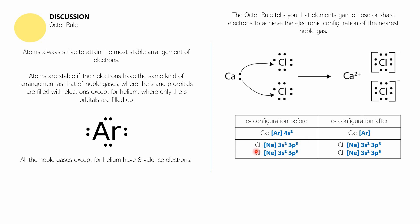Each of these chlorines has seven electrons in their valence shell: 3s2 and 3p5. But upon receiving one electron from calcium, it became 3s2, 3p6 — and 2 plus 6 becomes 8. Therefore, chlorine is now a stable atom. Both chlorines are now stable.